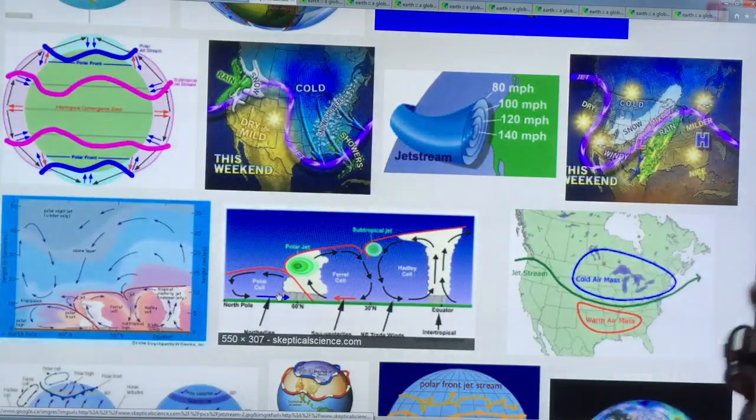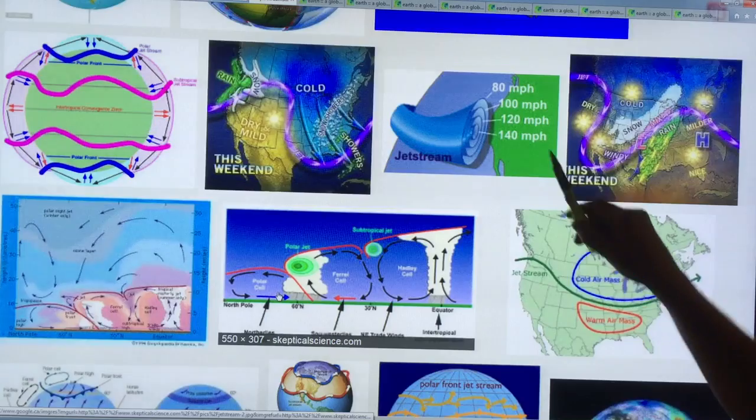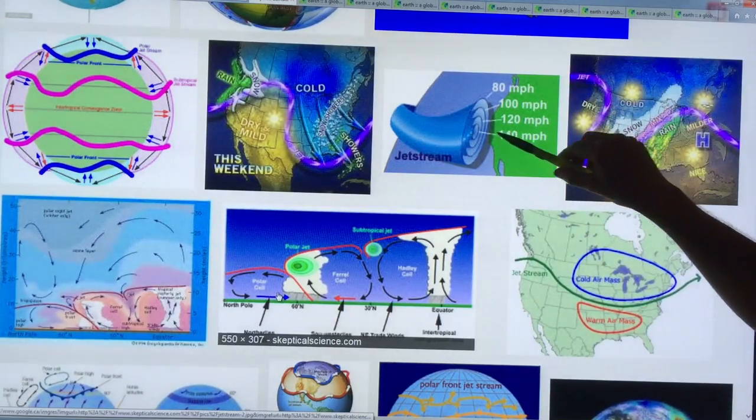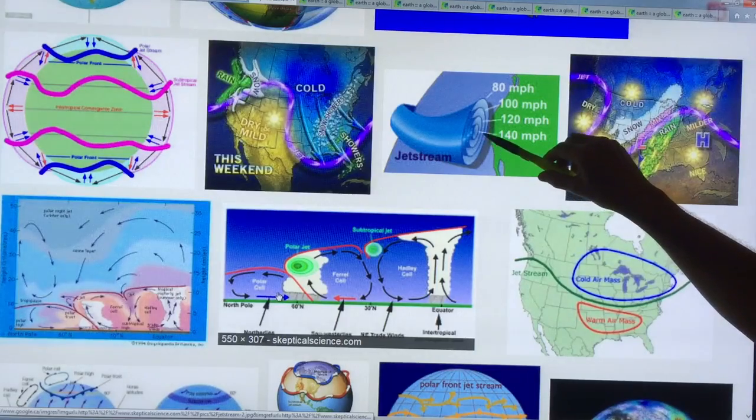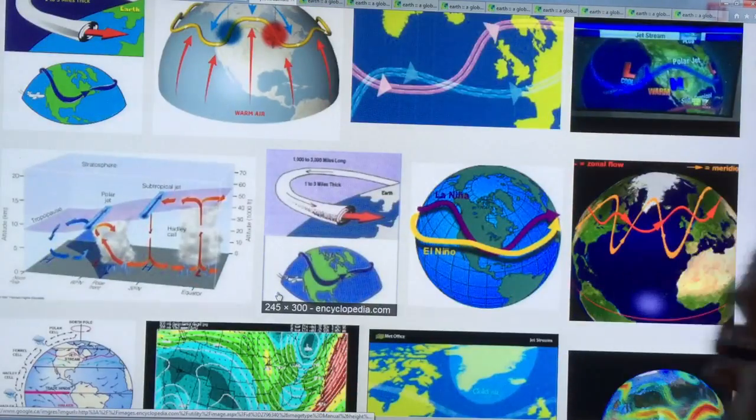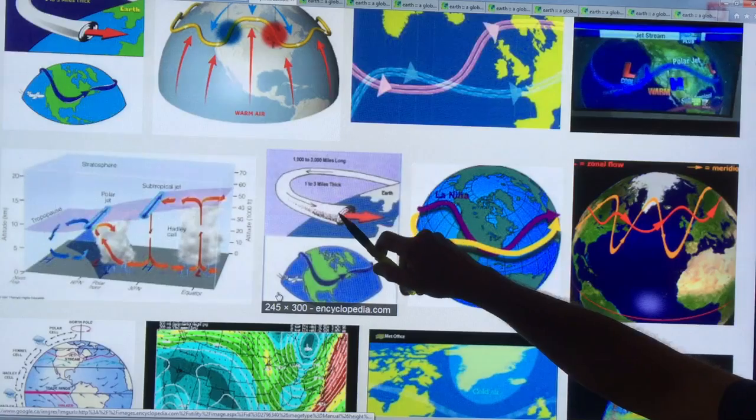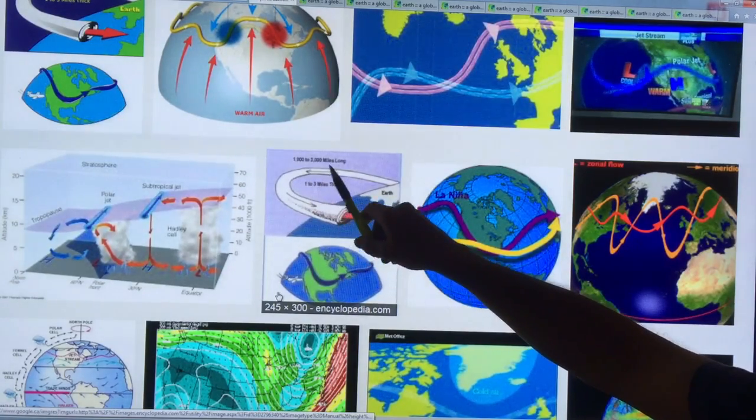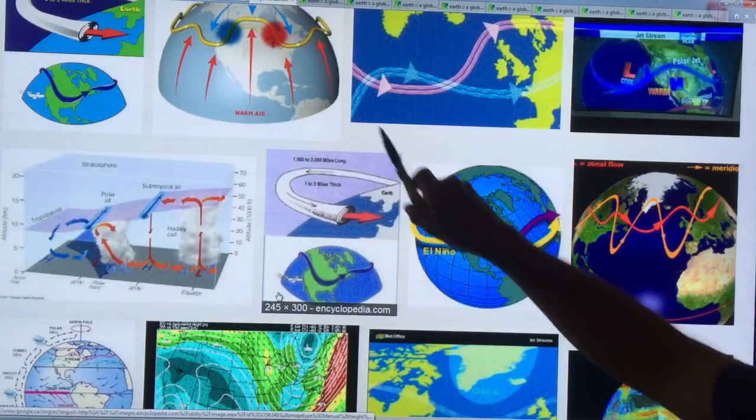This is another view of the jet stream. So it circumvents the earth, very high speeds and a central core speed dropping as you go away from the center of the core. This is a good schematic here. So one to three miles thick, 1000 to 3000 miles long, circumventing the earth.